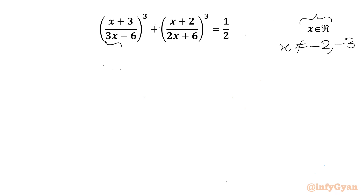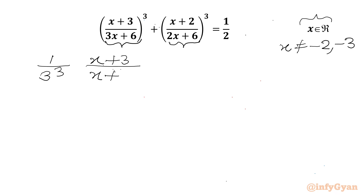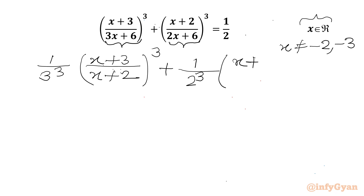Now I will take 3 common from here and 2 common from here. So I will write 1 over 3 cubed times x plus 3 over x plus 2 whole cube, plus 1 over 2 cubed times x plus 2 over x plus 3 whole cube equal to one half.